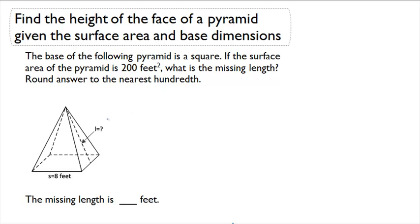So let's take a look at the picture. We're looking for the slant height. That's our missing dimension. And we know that S equals 8 feet.